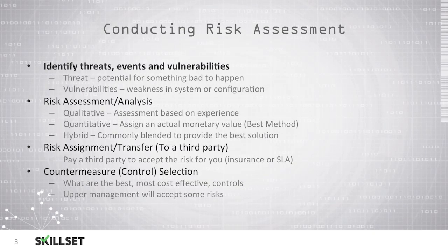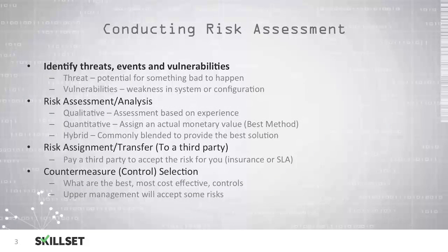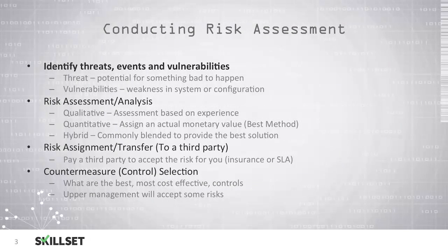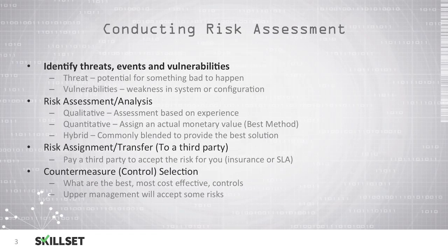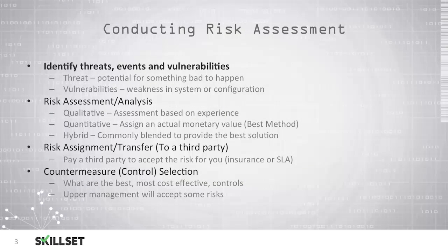When you're conducting your risk assessment, there are three different ways to be able to do this. A qualitative risk assessment focuses on experience and generally does not involve monetary values. With a quantitative risk assessment, we assign a monetary value to all of our assets and to the risks and the damage that they could cause, and this is considered the best method. But the most commonly used is a hybrid assessment where we blend qualitative and quantitative together to give us the best picture of what we could experience in the event of an emergency or other negative event. You should be familiar with the three different types of risk assessments for the CISSP examination.